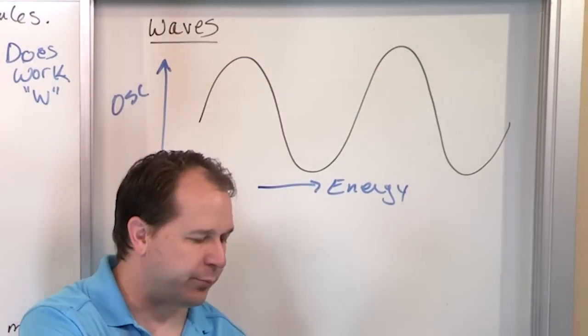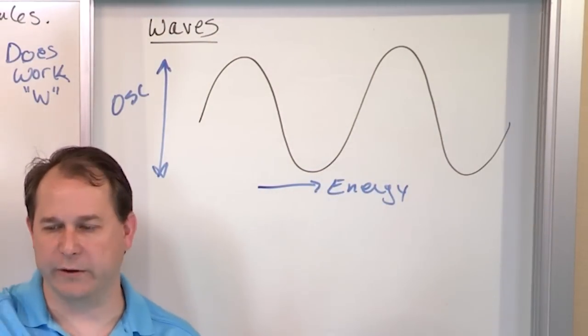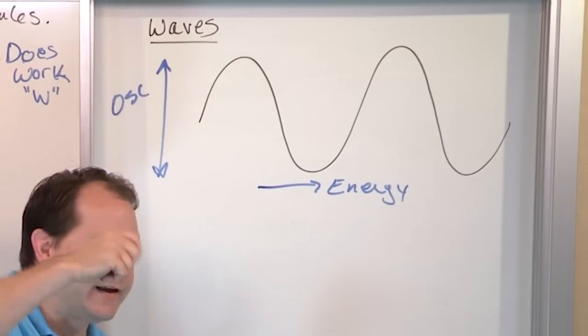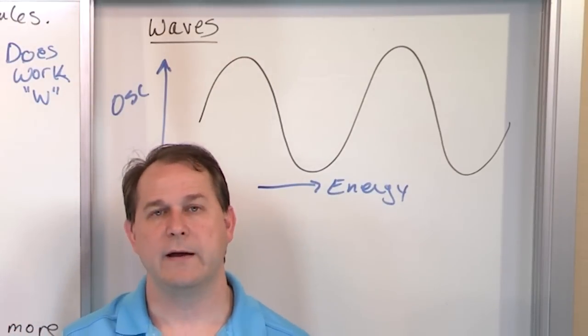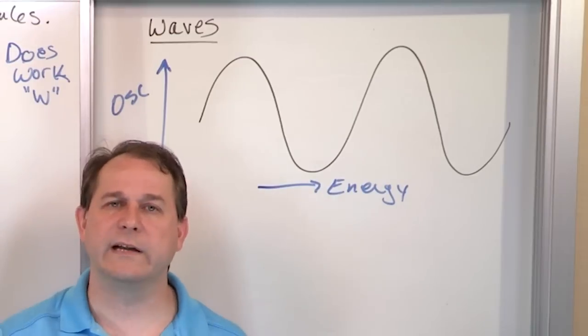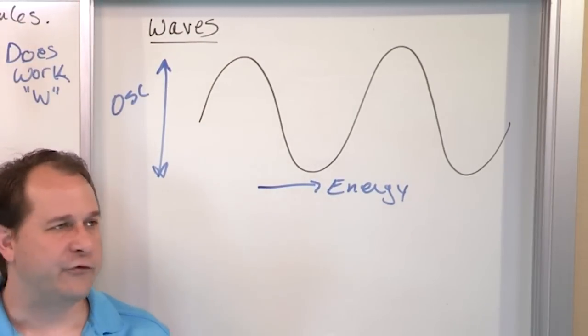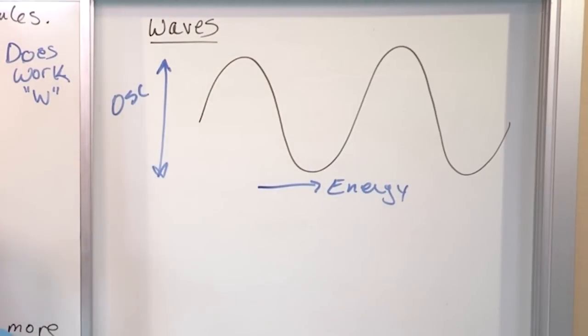So you can also see this with a rope. If I take a rope and I tie it to the wall, or I get my friend to hold it and I've got the other end, I can start oscillating it up and down and it's going to start to propagate along the rope. And it's going to hit my friend's hand. And if I shake it hard enough, his hand's going to start wiggling because I'm taking energy from my hand, transmitting it through a wave, hitting my friend. And so I can use this kind of wave to transmit energy.